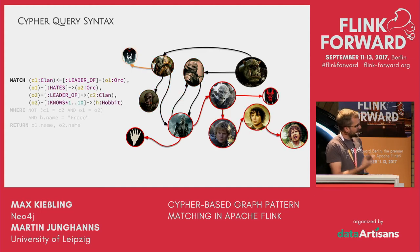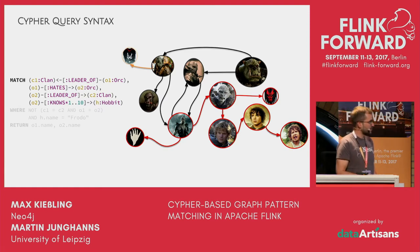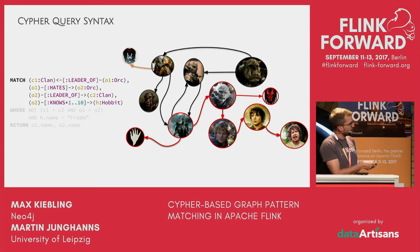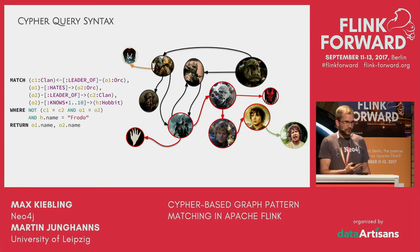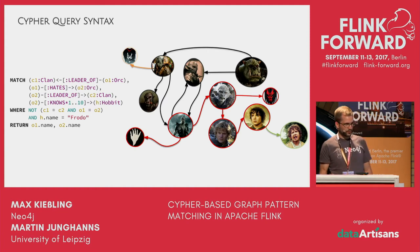We extend the query: the hated orc needs to be a clan leader of another clan, and he needs to know hobbits — not only directly, but up to ten hops away. This is a variable-length path expression. That's true for this orc and this sub-pattern. Then we further filter to only the hobbit whose name is Frodo, which applies to this one here. So this is our final result that gets returned.